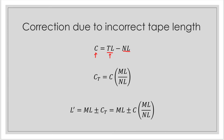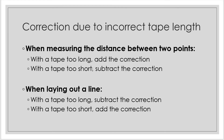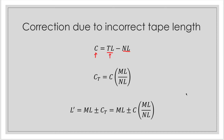The formula for the true measured length uses the symbol L prime. The true measured length is just the measured length plus or minus the total correction. The plus or minus depends on whether the tape used is too short or too long. Remember the rules: we add the correction when the tape is too long when measuring; we subtract the correction when the tape is too short when measuring. Otherwise, opposite rules apply when laying out.